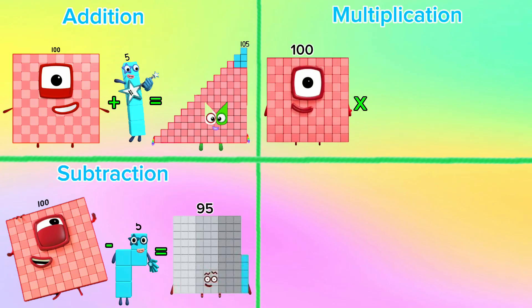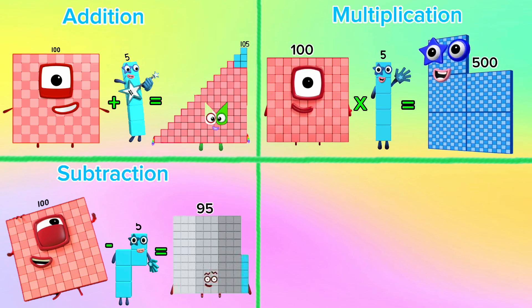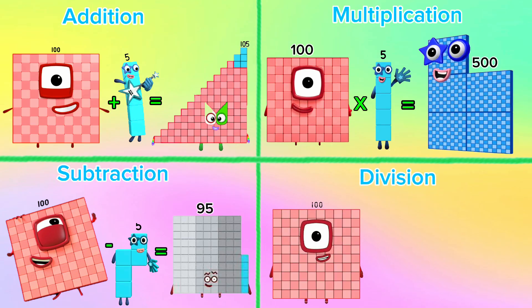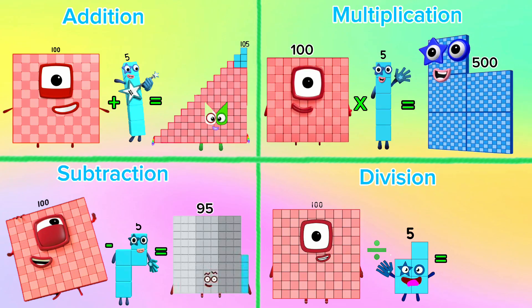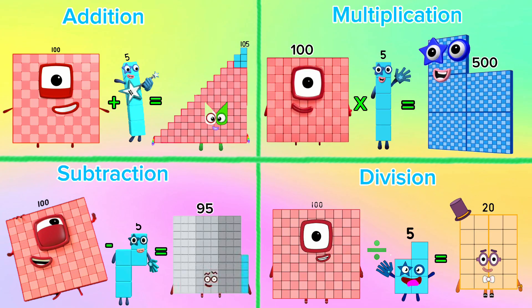100 multiplied by 5 is equals to 500. Next is division. 100 divided by 5 is equals to 20.